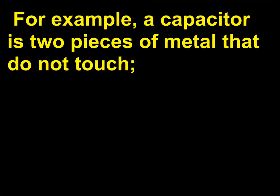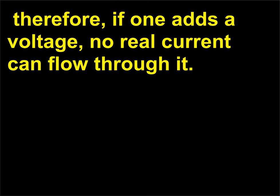But if the current can't flow through a device, the current becomes imaginary. For example, a capacitor is two pieces of metal that do not touch. Therefore, if one adds a voltage, no real current can flow through it.